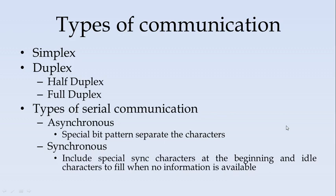Now we see the types of serial communication. Communication could be simplex, meaning it is always one-way communication from one node to the other. The next is duplex communication, which is two-way communication. When it is half duplex, even though it is two-way communication, only one-way communication can happen at a time — data transfer can happen from one node to the other at a time. When it is full duplex, both nodes can send and receive at the same time, so two-way communication happens simultaneously.